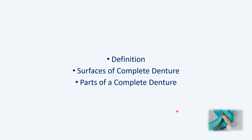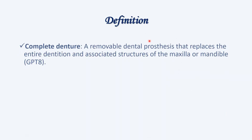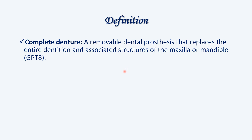To move on with the definition — what do you mean by complete denture? It is a removable dental prosthesis which replaces the entire dentition and which is associated with structures of the maxilla or the mandible. This definition is given from GPT-8.